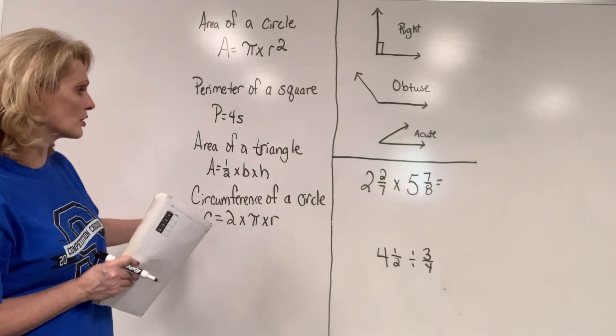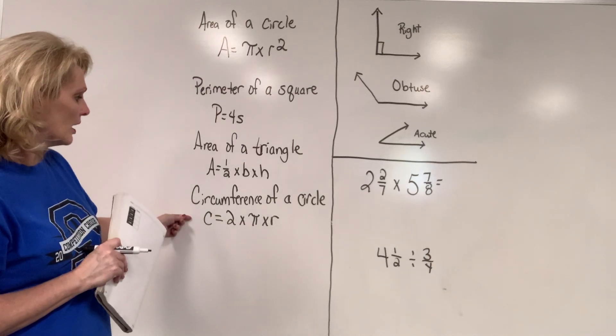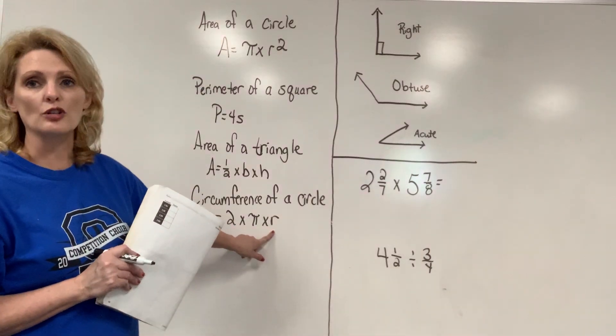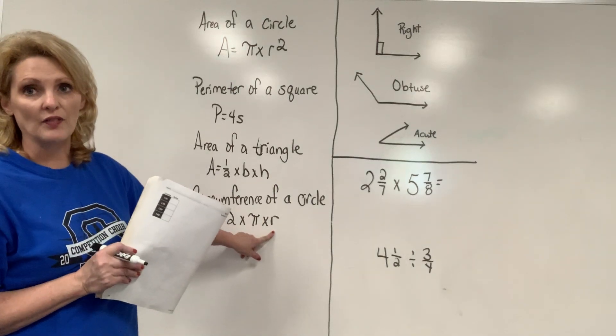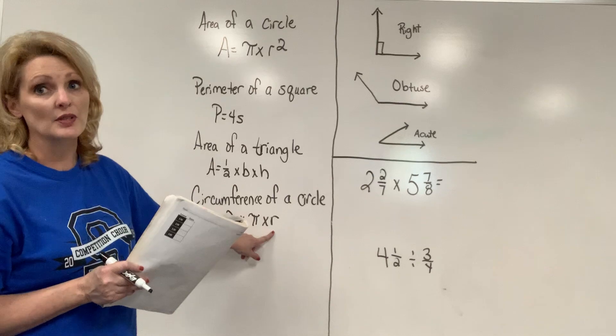Then you also have circumference of a circle, 2 times pi times r. So make sure if they give you diameter, always remember to find the radius first because sometimes they will try to trick you.